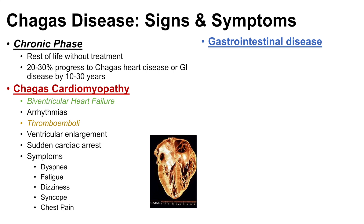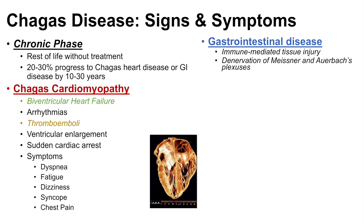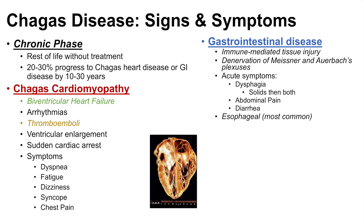With regards to Chagas gastrointestinal disease, it is an immune-mediated tissue damage — the immune system becomes activated and literally damages the gastrointestinal tissues of the patient. It leads to denervation of the Meissner's and Auerbach's plexuses. Patients can experience dysphagia, starting with solids and progressing to both solids and liquids, as well as abdominal pain and diarrhea.